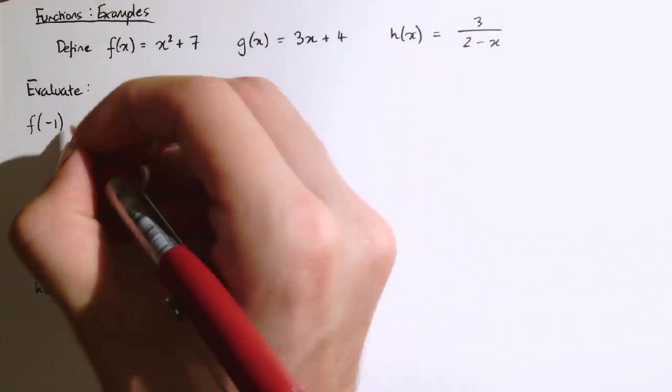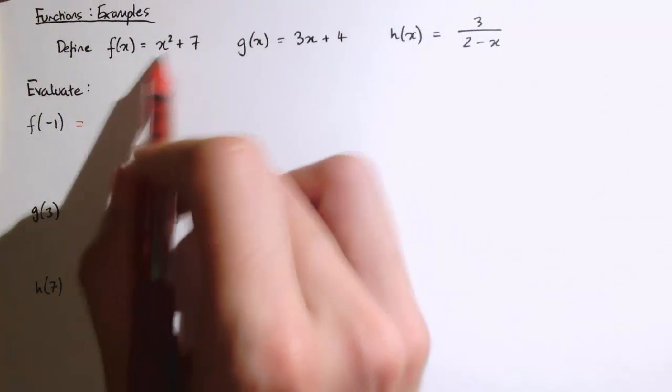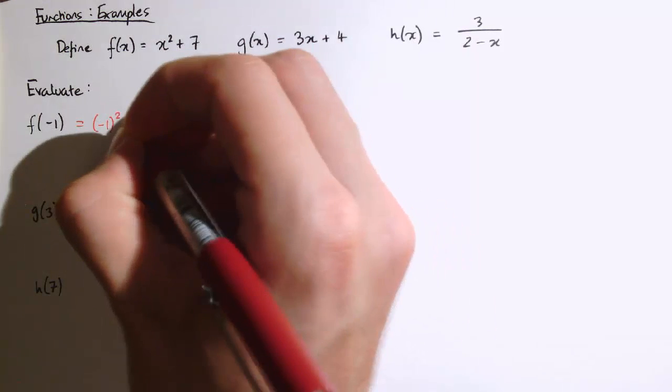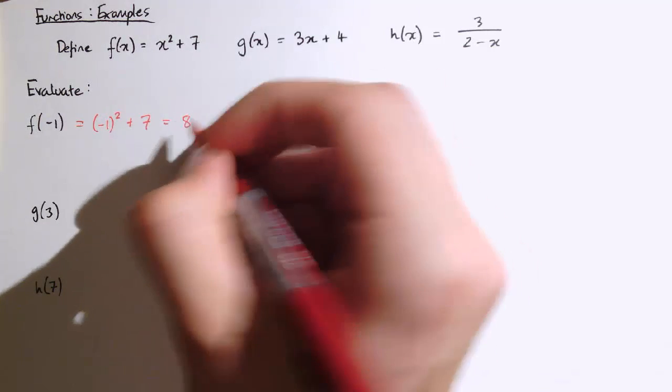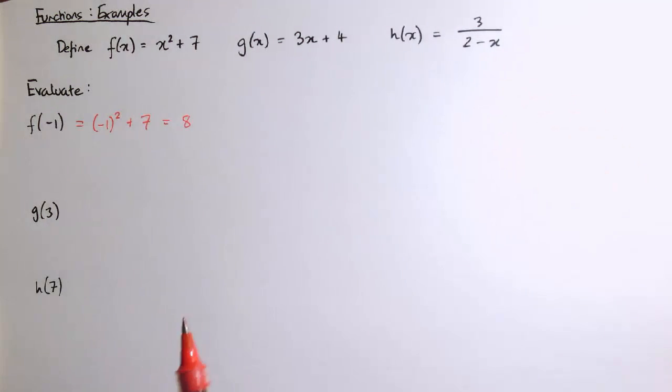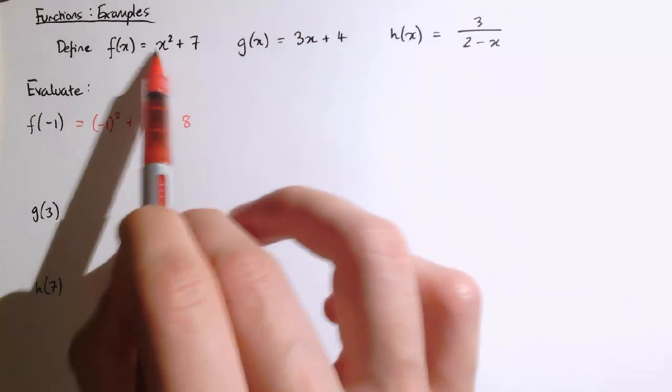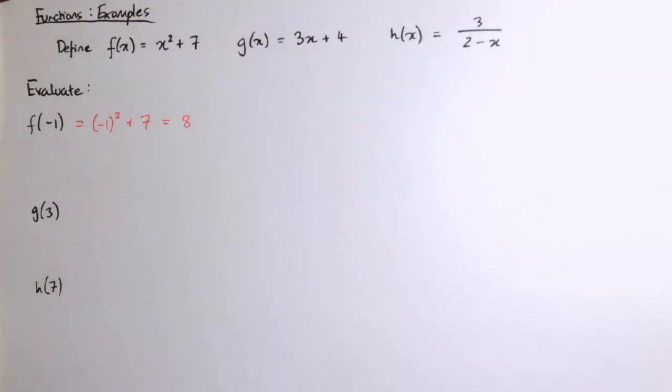So firstly, f of minus 1. If I put minus 1 into this first function, I'm going to replace x with minus 1. That's minus 1 squared plus 7, which is 1 plus 7, which is 8. Notice we have to be careful when we're substituting this in that it's actually minus 1 that's substituted in, and it's x squared. So it's that value then squared plus 7.